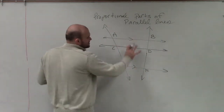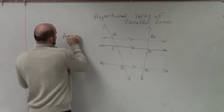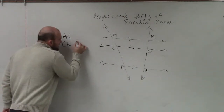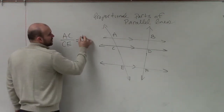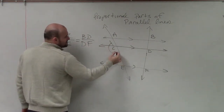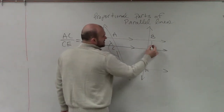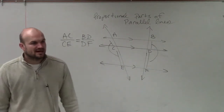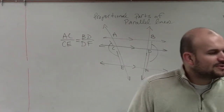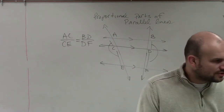So what this is saying is between parallel lines, we have proportions — meaning AC over CE is equal to the ratio of BD over DF. That side's ratio with that side is proportional to that side's ratio with that side. They're equal. So once you have an equal proportion, we know we can solve by using our cross product and so forth.